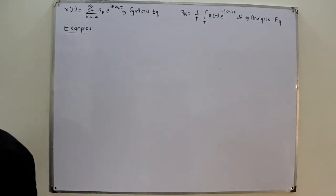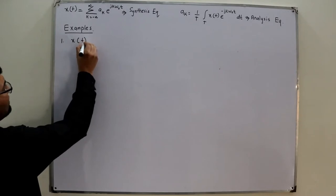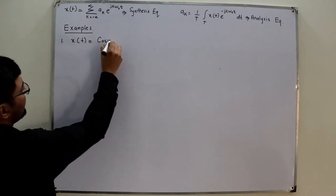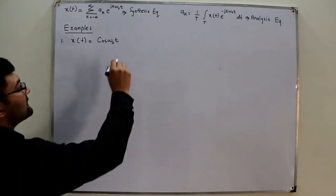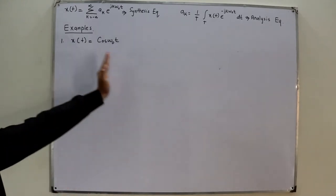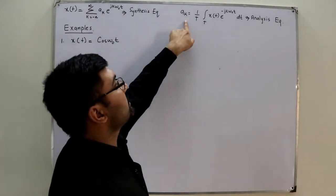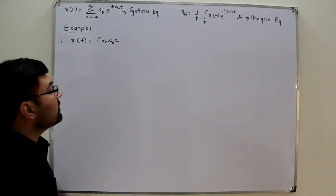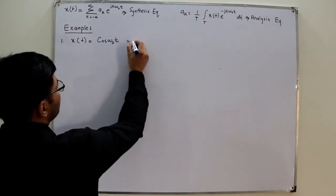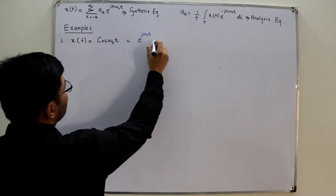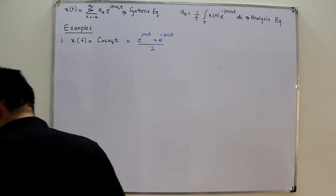Starting off with some simpler examples — the basic ones. Although we've seen the sinusoidal, let's do it again through a proper way. So this is cos(ω₀t), where ω₀ is the fundamental frequency. If you are asked to find the Fourier series representation, you need to find the Fourier coefficients first. For a sinusoidal wave, you can directly use Euler's relationship, so cos(ω₀t) becomes an exponential of jω₀t plus an exponential of −jω₀t, upon 2.